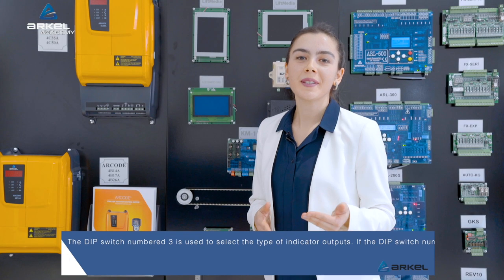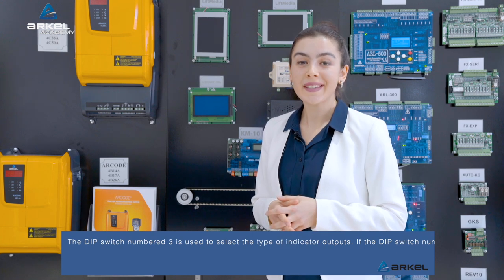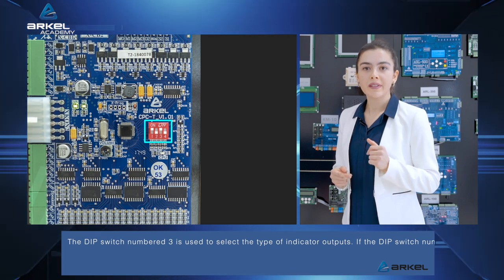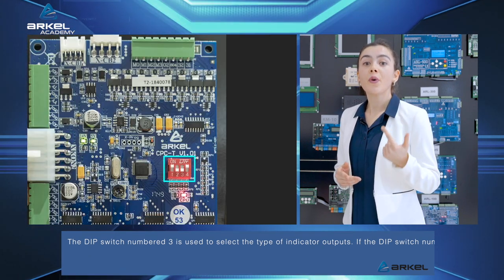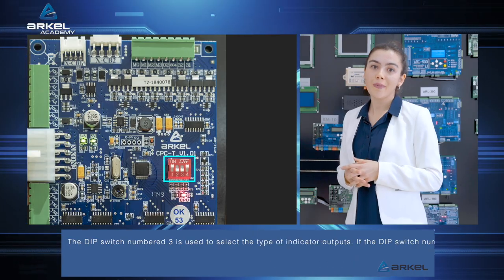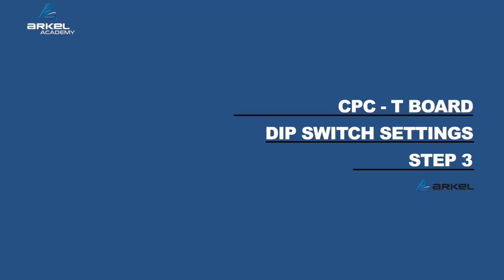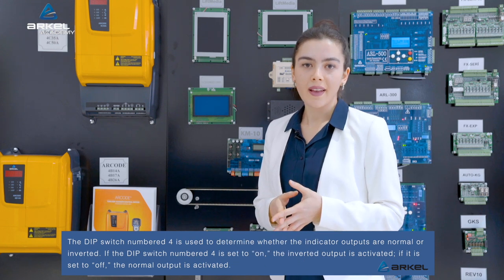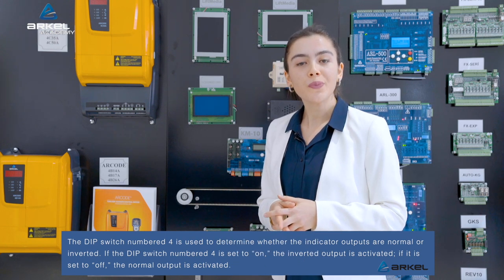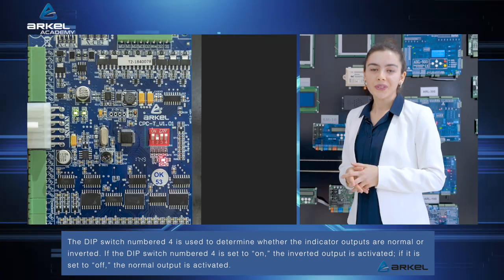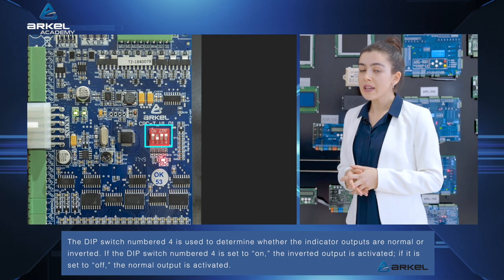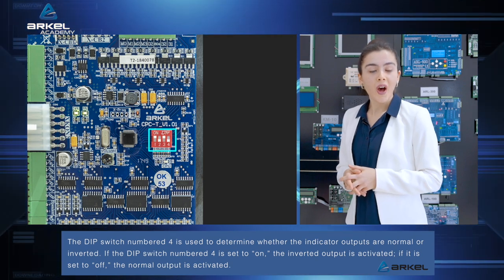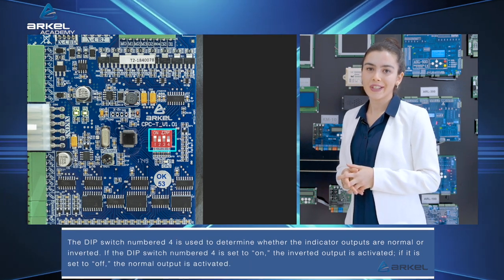Dip switch 3 is used to select the type of indicator outputs. If dip switch 3 is set to on, the output is adjusted for grey code. If it is set to off, the output is adjusted for binary code. Dip switch 4 is used to determine whether the indicator outputs are normal or inverted. If dip switch 4 is set to on, the inverted output is activated. If it is set to off, the normal output is activated.